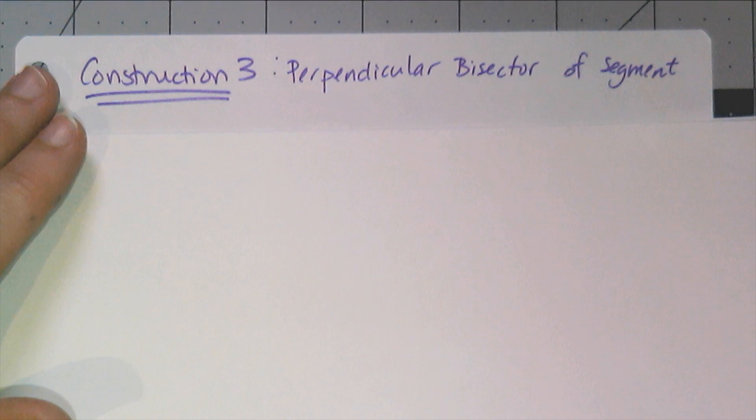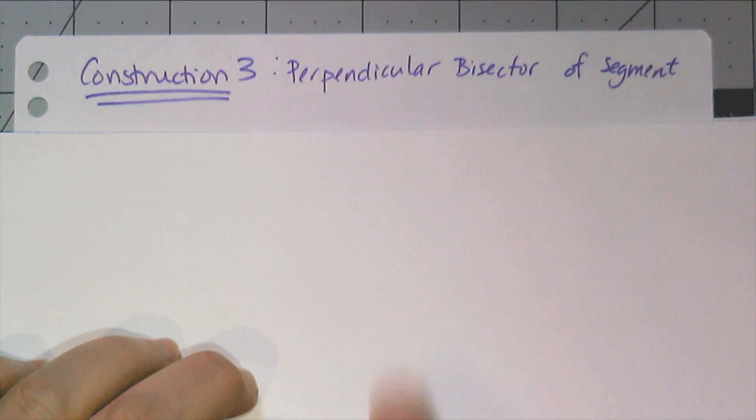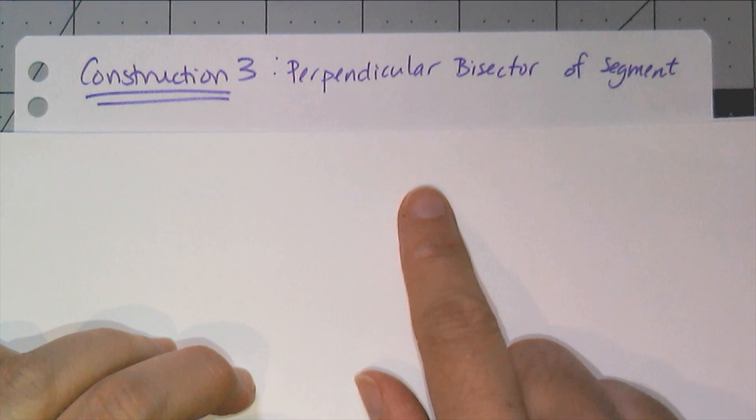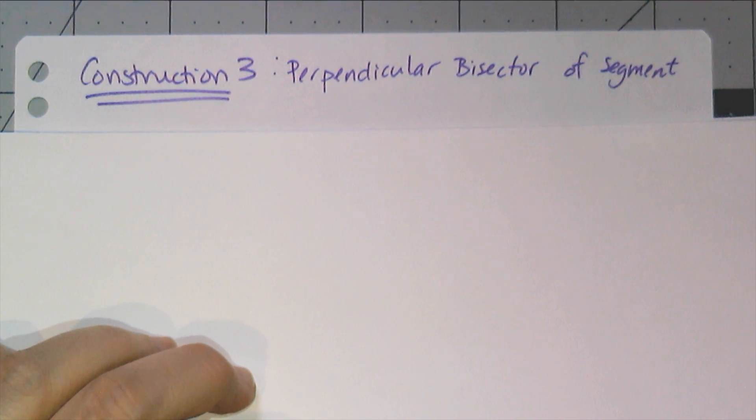So now we're on our third construction, which is how to construct a perpendicular bisector of a segment. And of course this requires us to remember what a perpendicular bisector is. We know what line segments are, right? Perpendicular means right angle, and bisect means to cut in half.